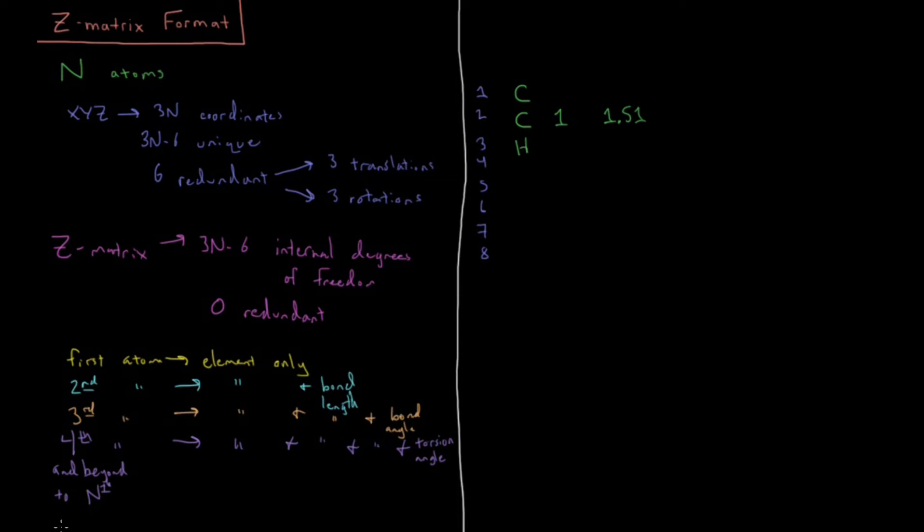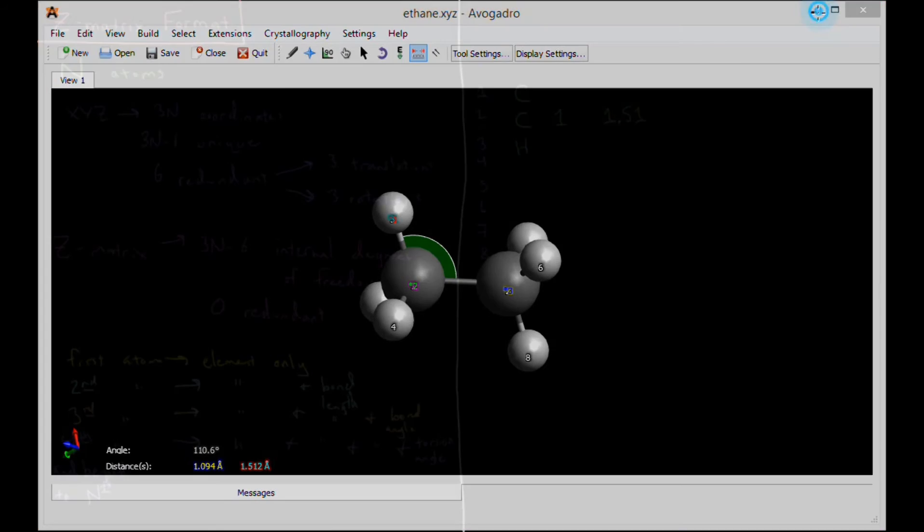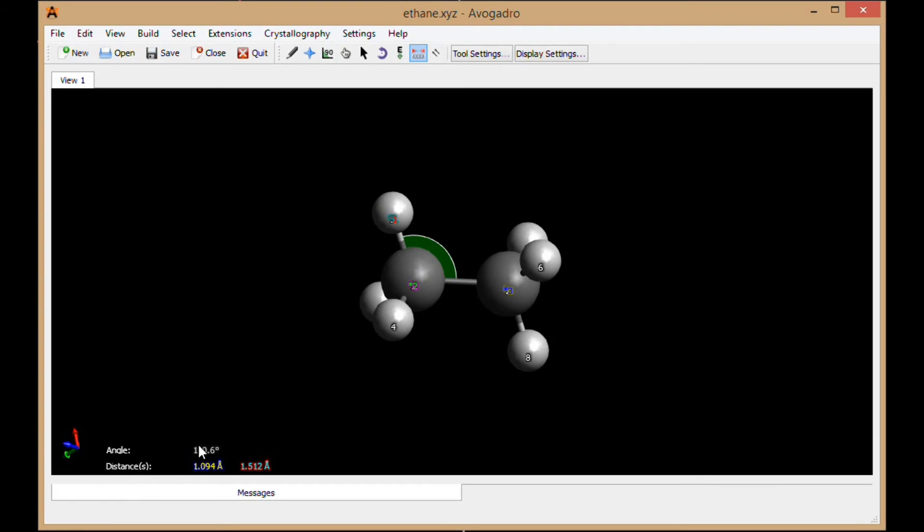The next atom is a hydrogen, hydrogen three. Hydrogen three is bonded to atom one. So three is bonded to one, and it has an angle to atom two. The bond angle is 110.6 degrees, and the bond length is 1.094 angstroms. So this hydrogen is bonded to atom one at 1.09 angstroms, and then it has an angle from three to one to two of 110.6 degrees.